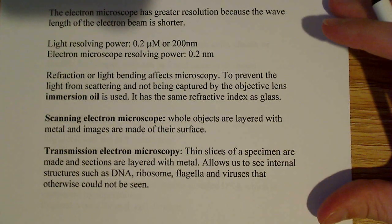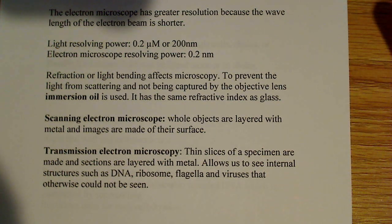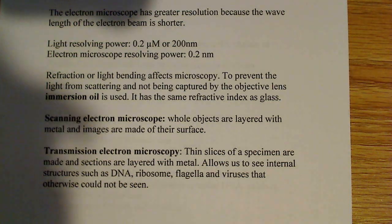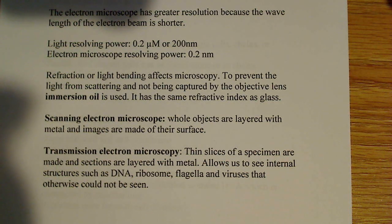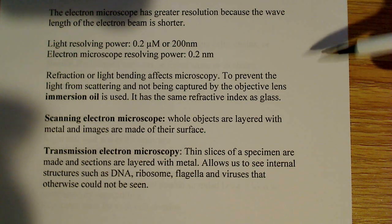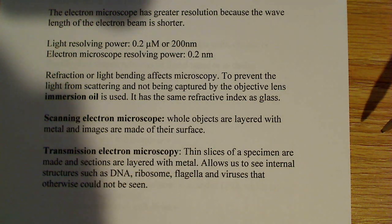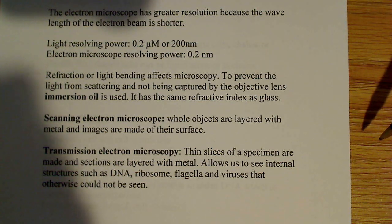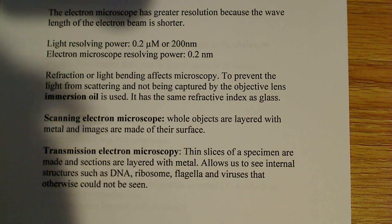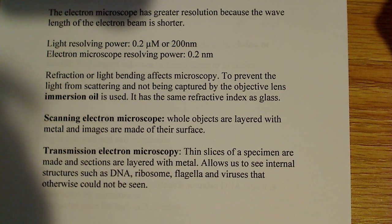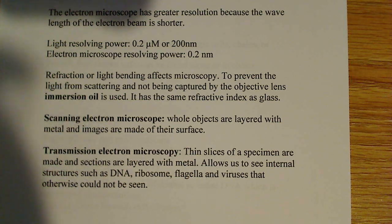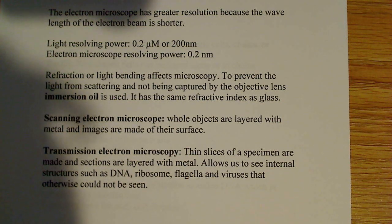There's also this concept of refraction — light bending in microscopes. When light travels through an object, it bends. To prevent light from scattering and not being captured by the objective lens, we use what's known as immersion oil. Immersion oil has the same refractive index as glass, and it's very useful in the lab, especially with a light microscope when you want to look at bacteria. You need to use immersion oil and about 1,000x power — the highest power on most light microscopes — and you'll be able to make out things such as gram staining: gram negative, gram positive, etc.